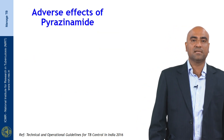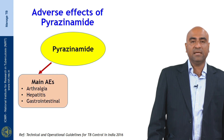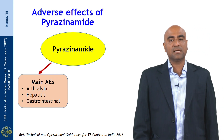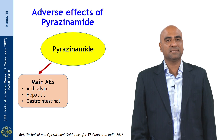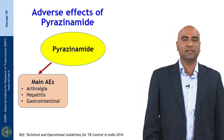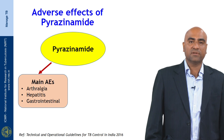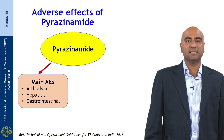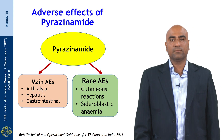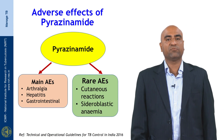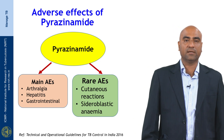Coming to the adverse effects of pyrazinamide: the main adverse effect is arthralgia, which is usually transient — lasting around 2 to 3 weeks before disappearing on its own. Other side effects include hepatitis and GI intolerance. Rare adverse effects of pyrazinamide are cutaneous reactions and sideroblastic anemia.